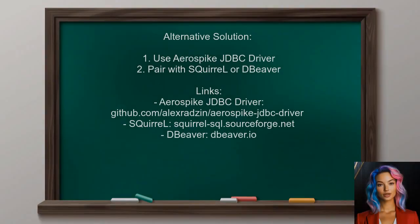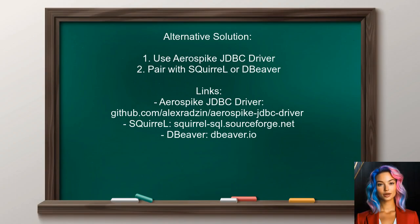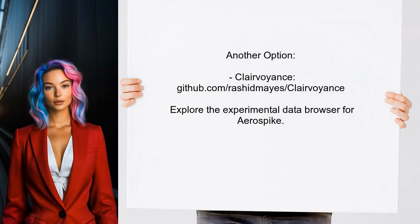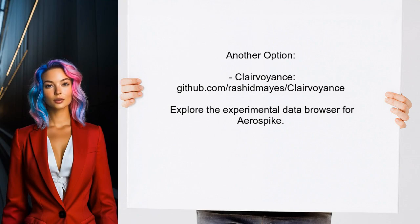One alternative solution for viewing data in AeroSpike is to use the AeroSpike JDBC driver. This can be paired with GUI tools like Squirrel or DBeaver for a more user-friendly experience. Additionally, there's an experimental data browser for AeroSpike called Clairvoyance, which you might find useful.